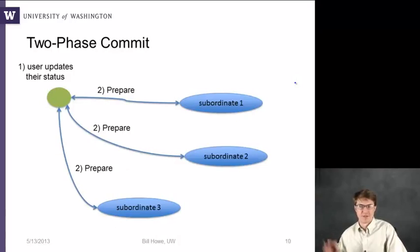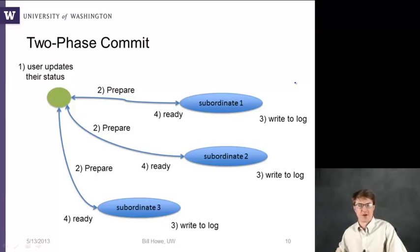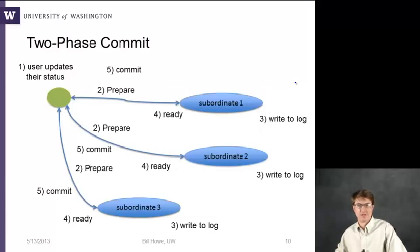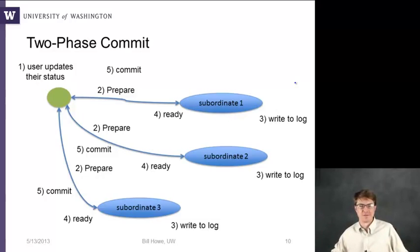Here is a schematic of it. In step one, the coordinator says prepare. These nodes all write ahead to the log and respond with yes, I'm ready to commit. The coordinator comes back with commit, and then finally all the work is done. The coordinator needs to watch out for failures and send back an abort if something has gone wrong.